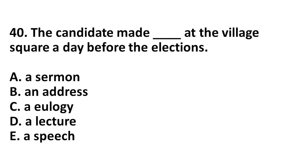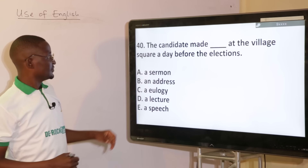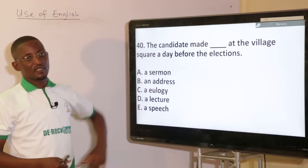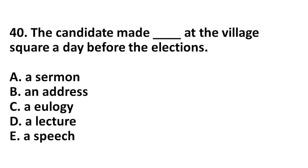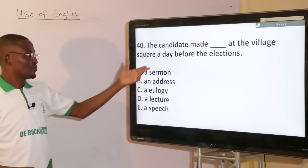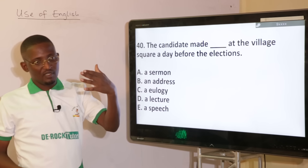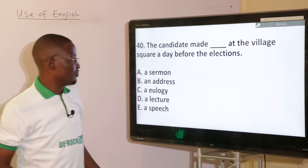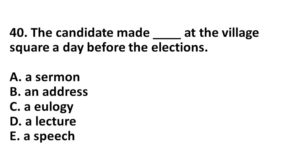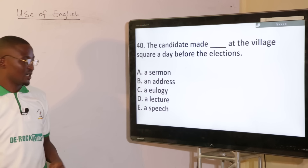The candidate made dash at the village square a day before the elections. We are talking about right choice of words in the field. Options: sermon, address, eulogy, lecture, speech. For a candidate who has come out to speak with the people, that is giving an address. The answer is: the candidate made an address at the village square a day before the election.